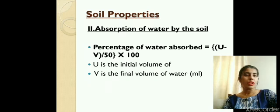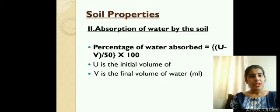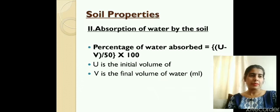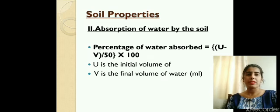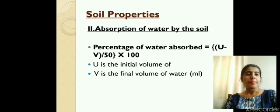The second property is absorption of water by the soil — how much water is going to be absorbed by a given sample of soil. Let U be the initial volume of water taken for the experiment and V be the final volume left after the experiment. U minus V gives the amount of water absorbed by the soil. Dividing by 50 (the 50 grams of soil taken) and multiplying by 100 gives the percentage of water absorbed.